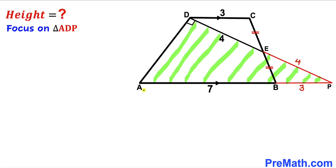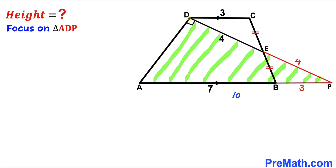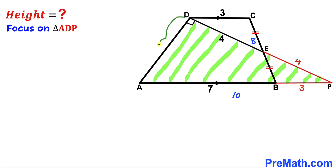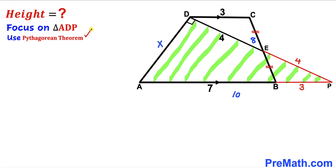Focusing on right triangle ADP: the full side length AP equals 7 plus 3, making 10 units, and side length DP equals 4 plus 4, making 8 units. Let's label side AD as x units. We will now apply the Pythagorean theorem — a squared plus b squared equals c squared — where the hypotenuse is 10.